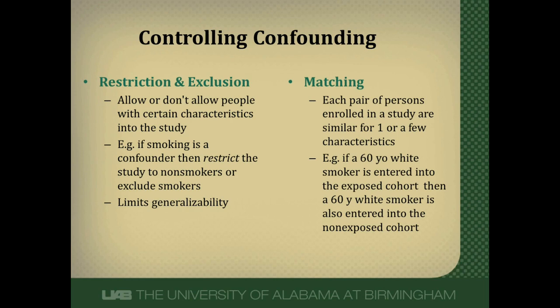Another approach is matching, where a characteristic one patient has in one arm of the study is matched by finding that same characteristic in a person placed in the other arm. We can only match on a handful of things — once we try to match on many factors, it becomes very difficult to find a match. For example, if a 60-year-old white smoker enters the exposed cohort, we find a 60-year-old white smoker for the non-exposed cohort, thereby controlling for both ethnicity and smoking.